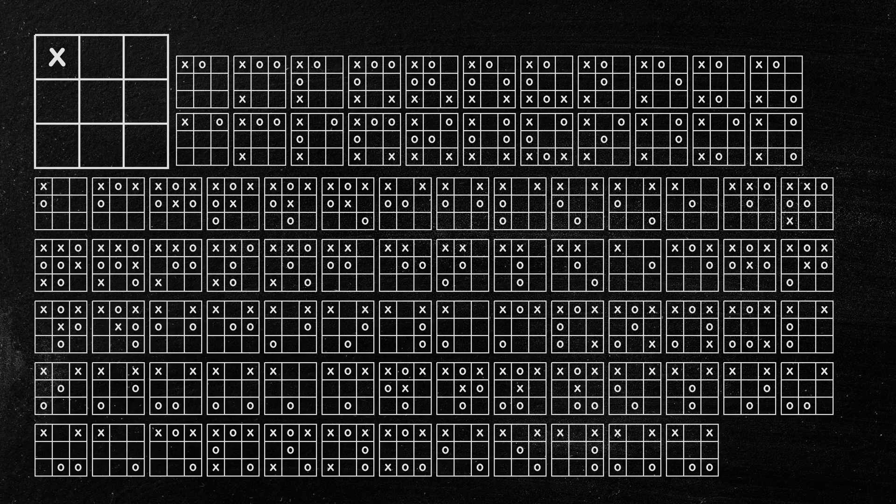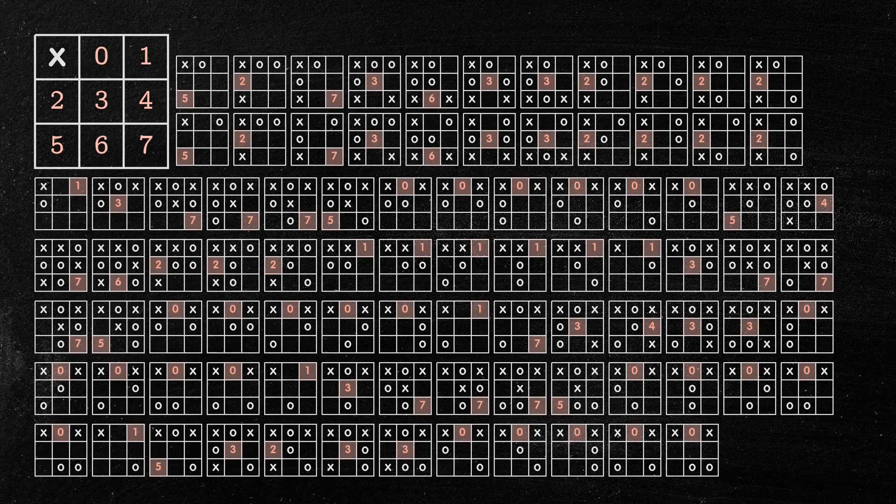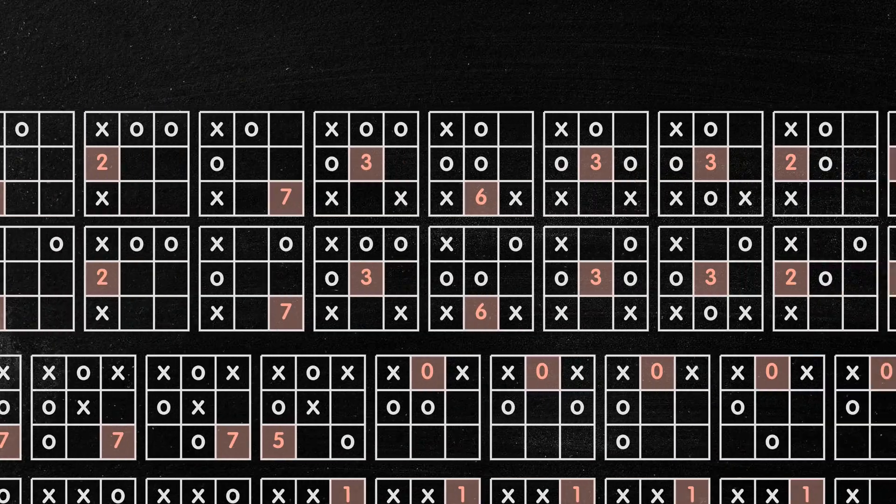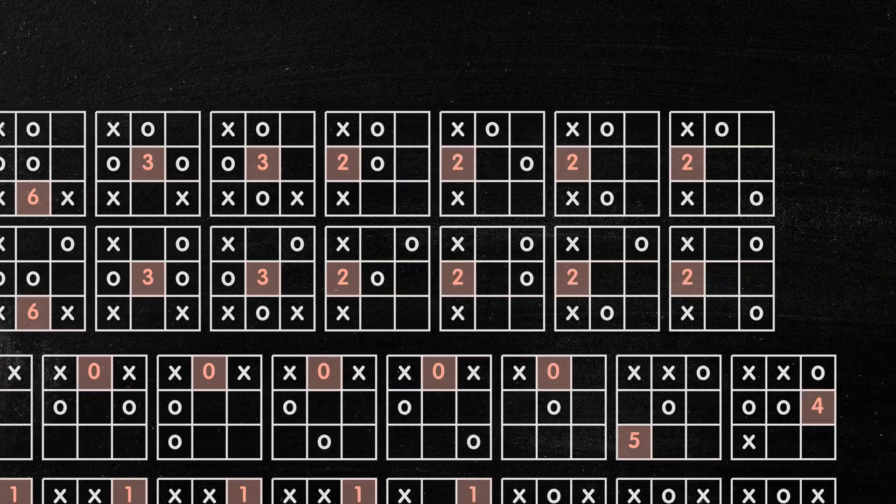Each optimal move corresponds to the square the perceptrons should choose. Since there are eight available squares, these will be our data set labels or classes, ranging from zero to seven.